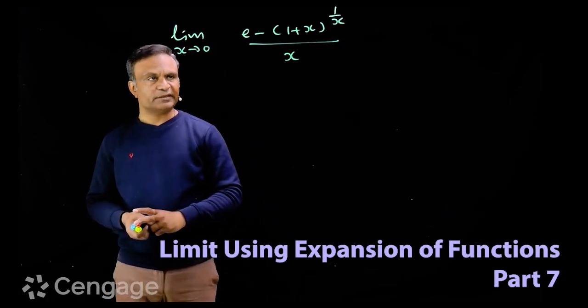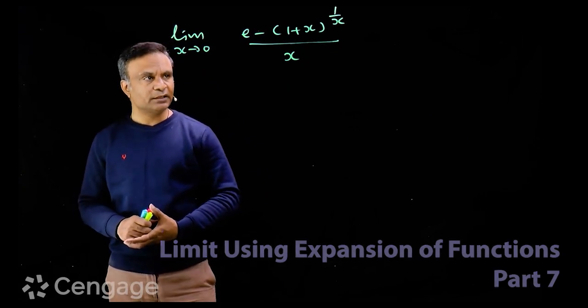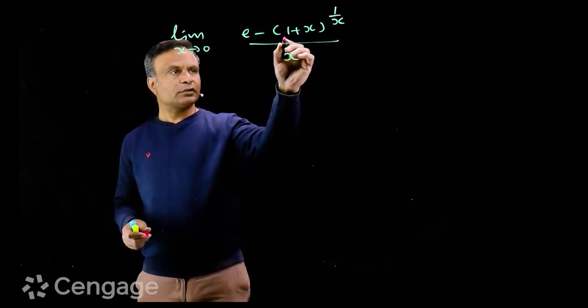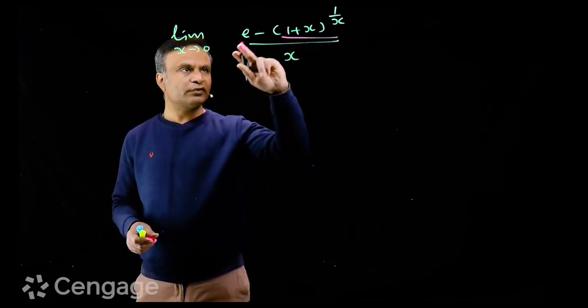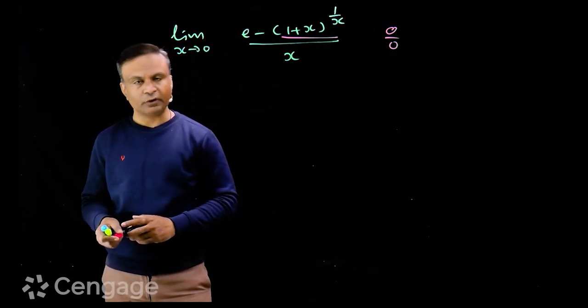Let us evaluate this limit. Limit x tends to 0 of e minus 1 plus x power 1 upon x upon x. When x tends to 0, this tends to e. So we have e minus e, 0 upon 0 form, which is indeterminate form.